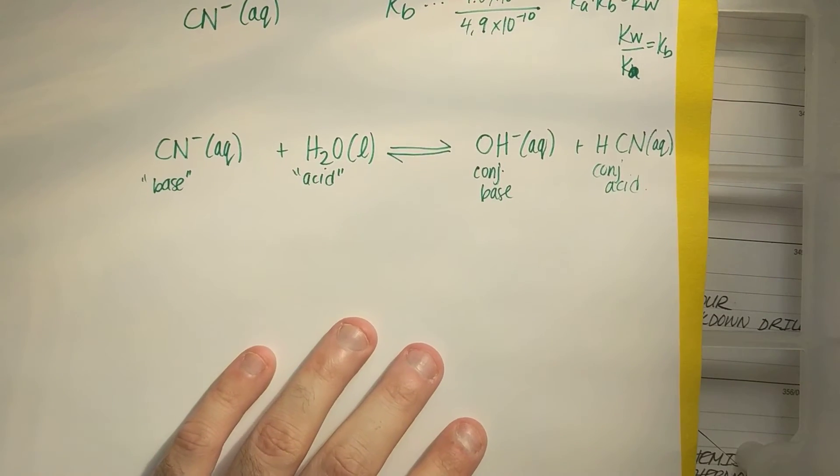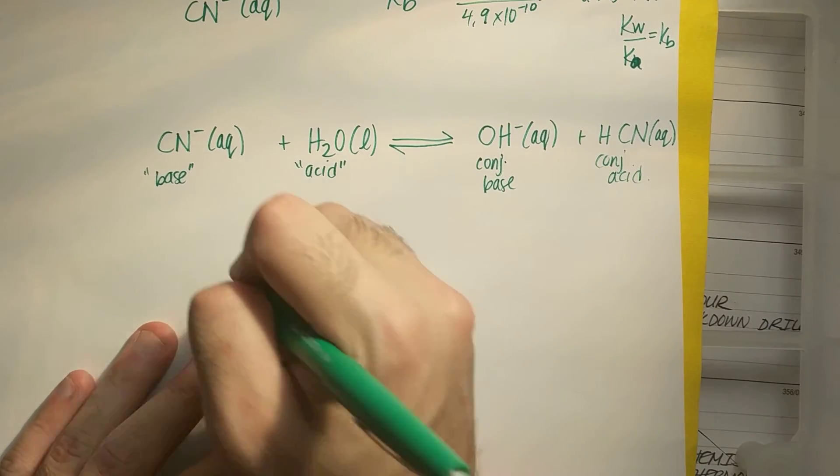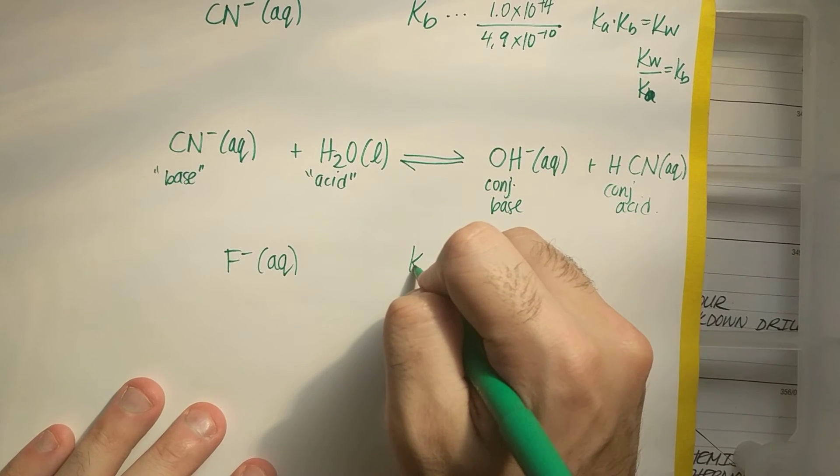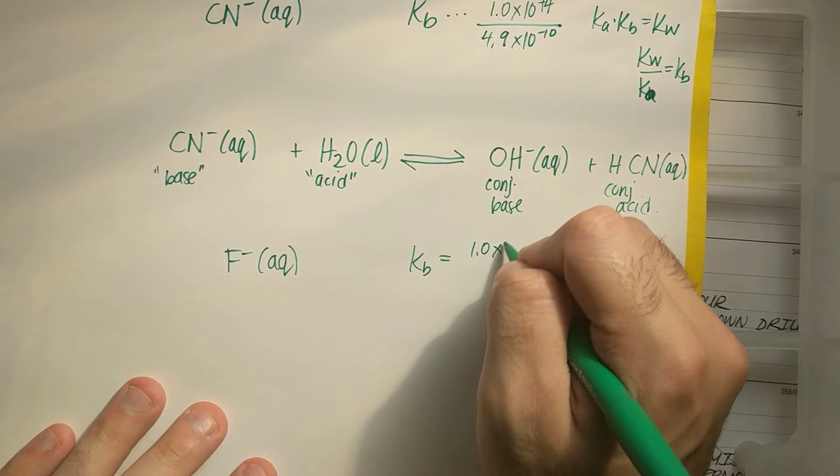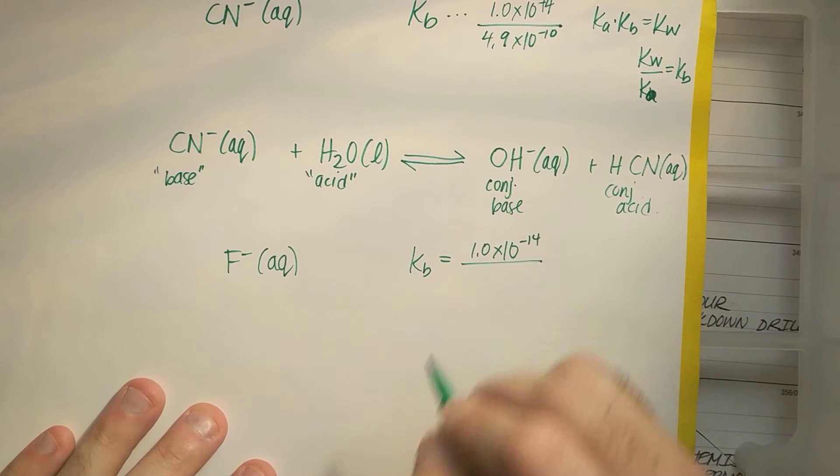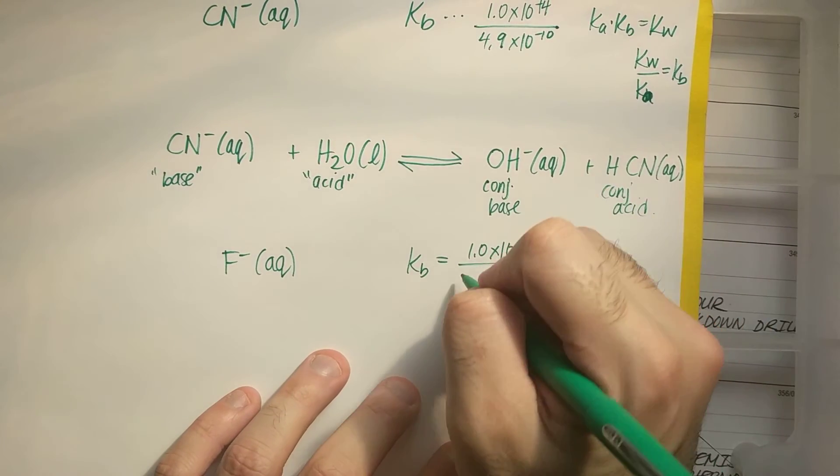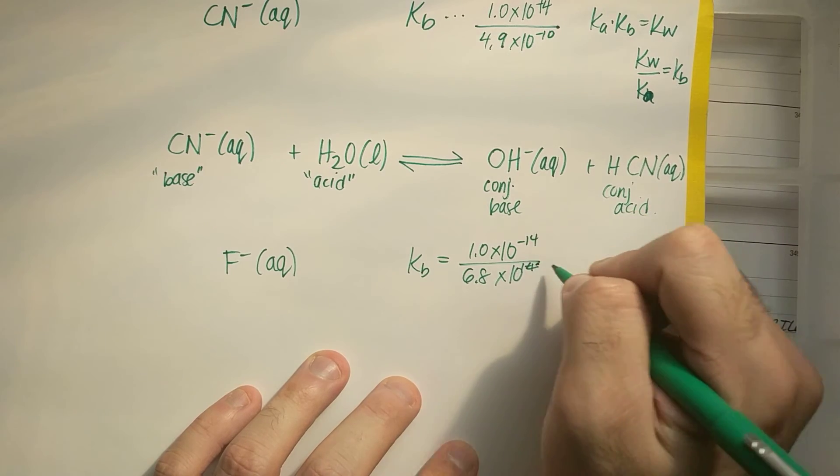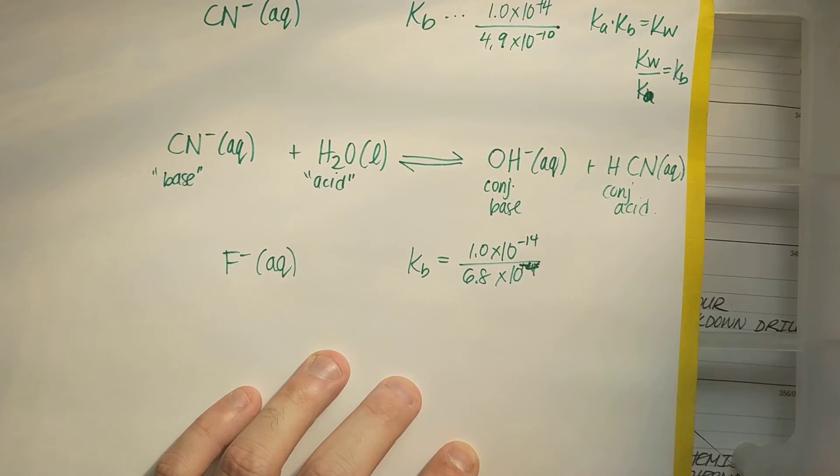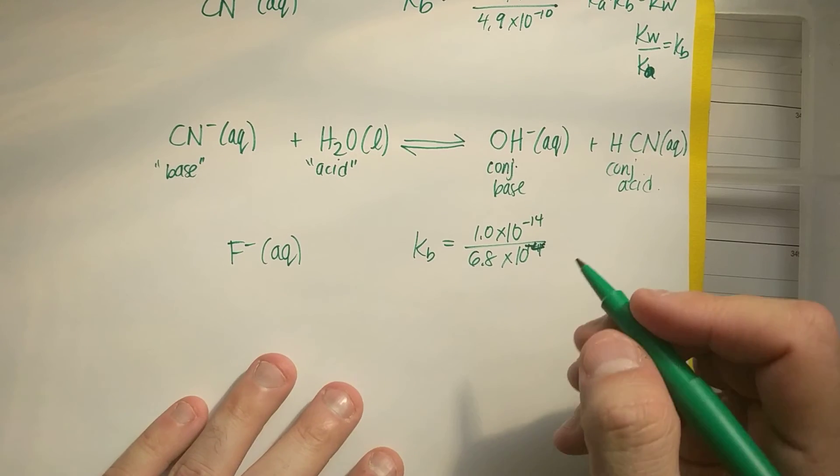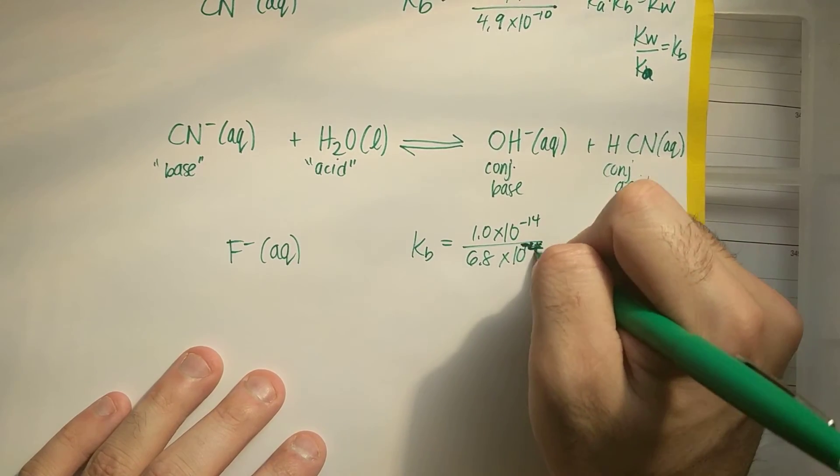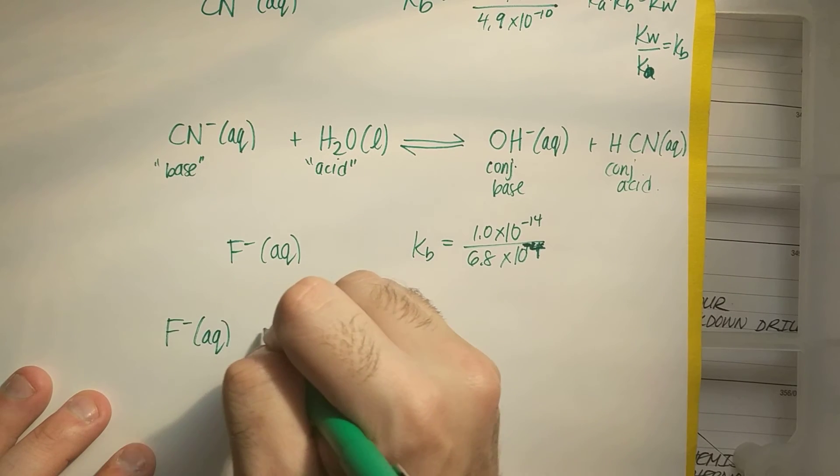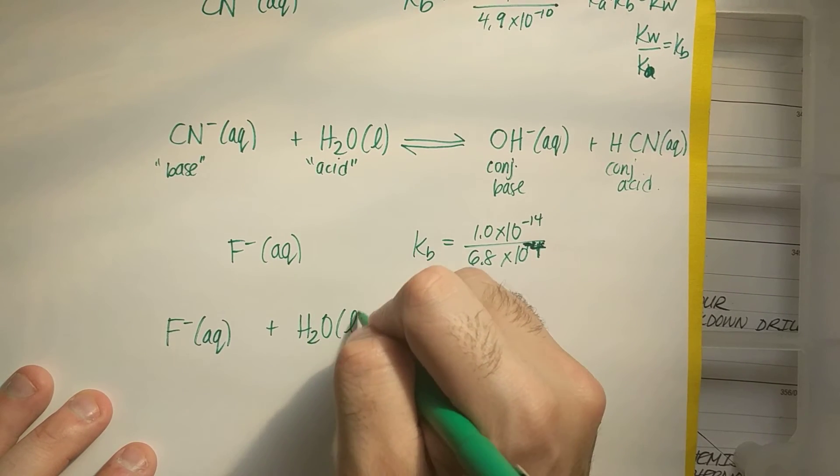I'll do the same thing with F minus. If I had F minus aqueous, and I'll have some KB, which is equal to 1.0 times 10 to the minus 14th, over its KA, which was 6.8 times 10 to the minus fourth. That's how I could solve for KB. If I want to write this base dissociation, it's the same idea. I add it to water, liquid.